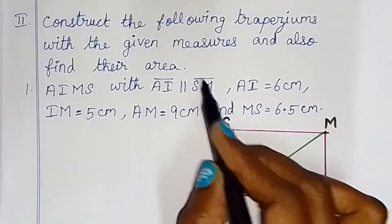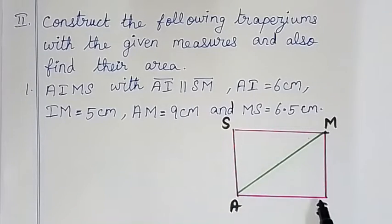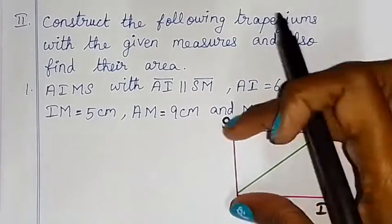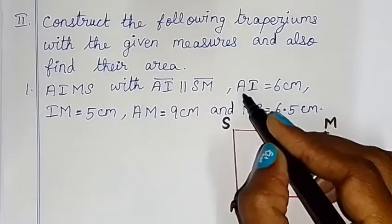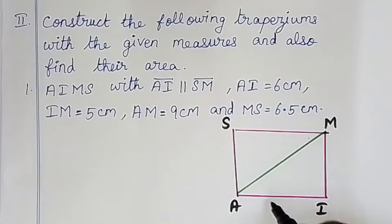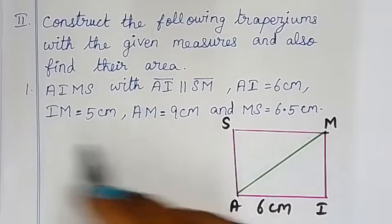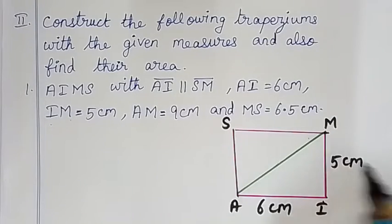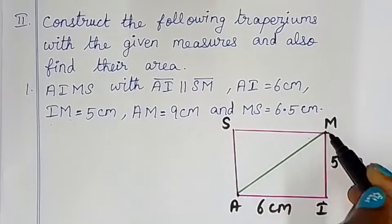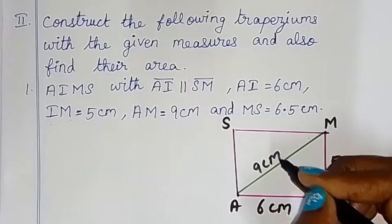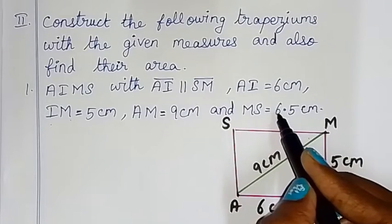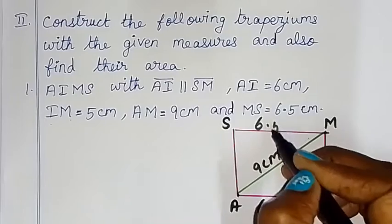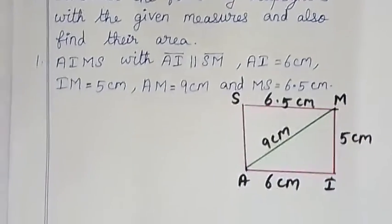AIMS is parallel to SM line segment. IM is equal to 5 cm. AM is equal to 9 cm. Diagonal value 9 cm. MS is equal to 6.5 cm. So, this measurement is 6.5 cm. So, how do we construct it?